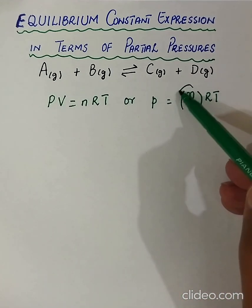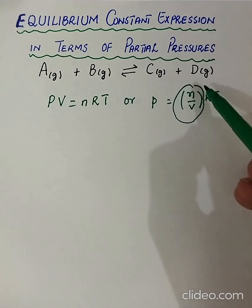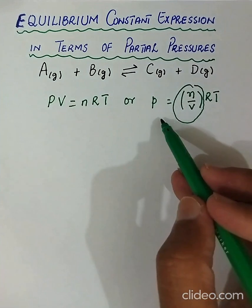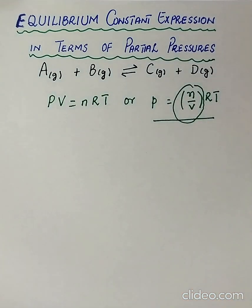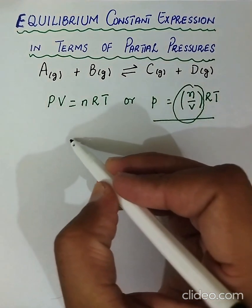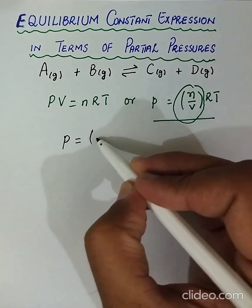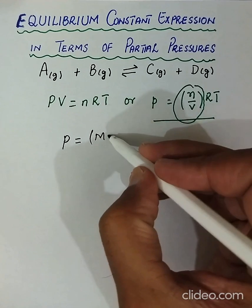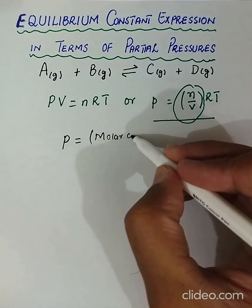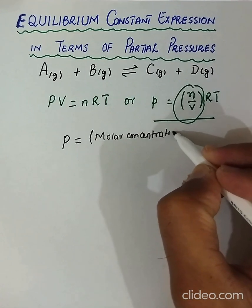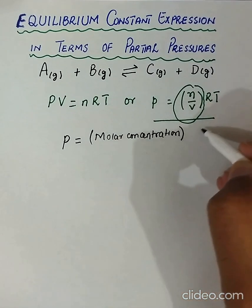This quantity n/V — what is this? This is the number of moles of gas per unit volume and is simply the molar concentration. So we can write this equation as P equals molar concentration times RT.